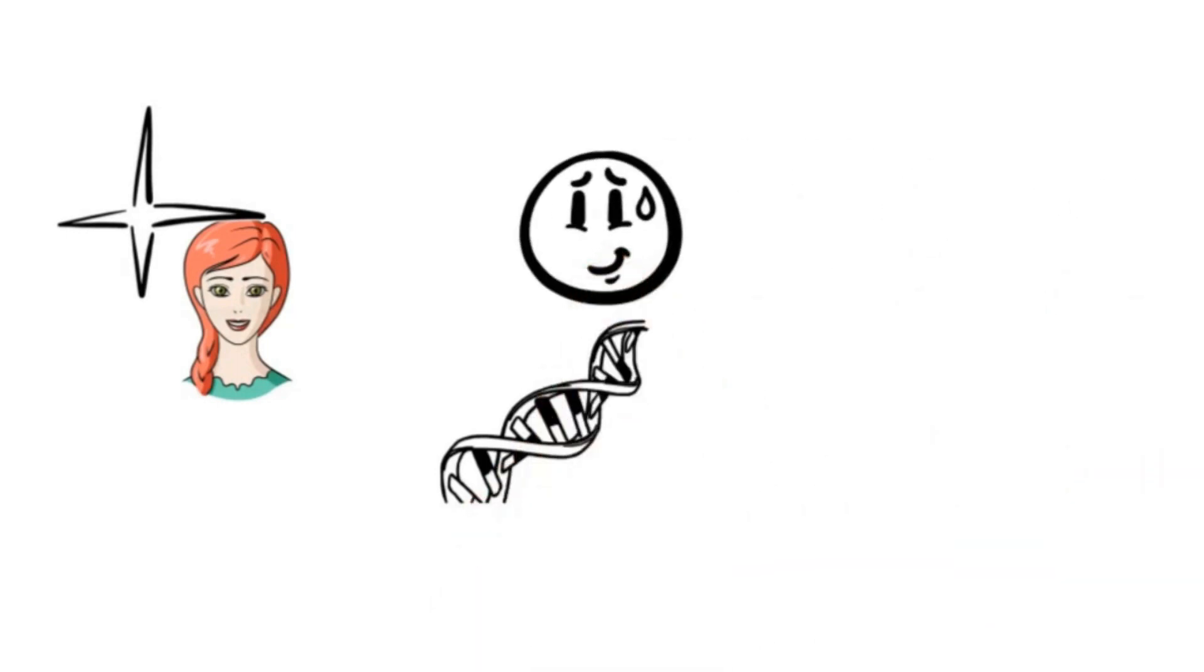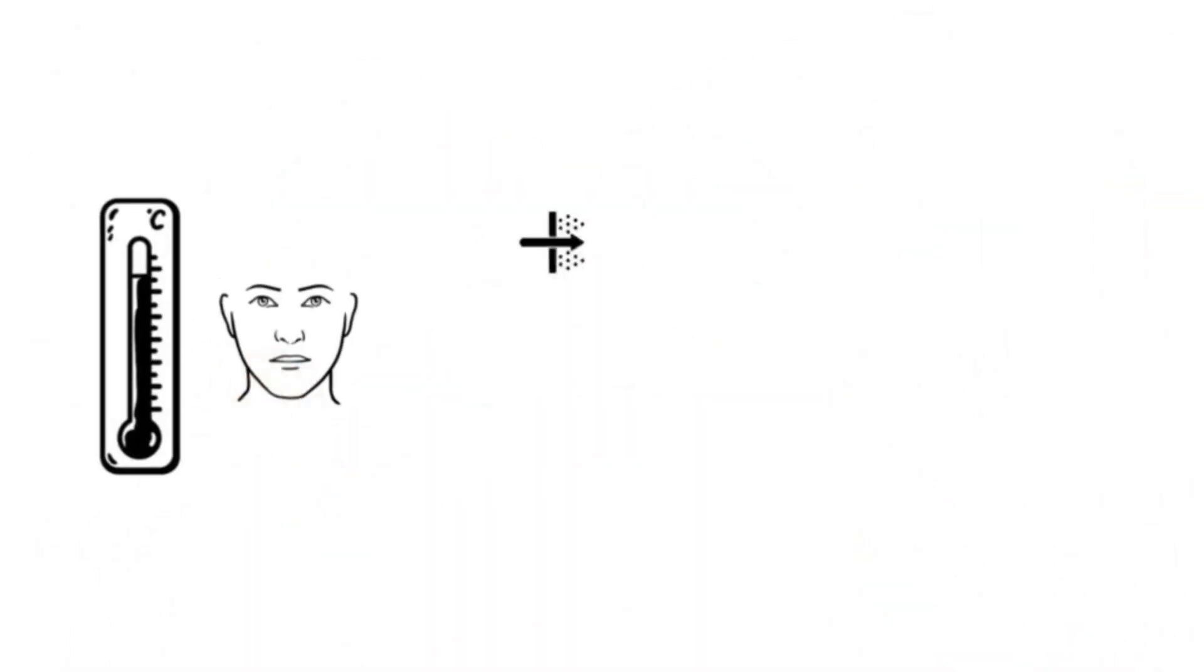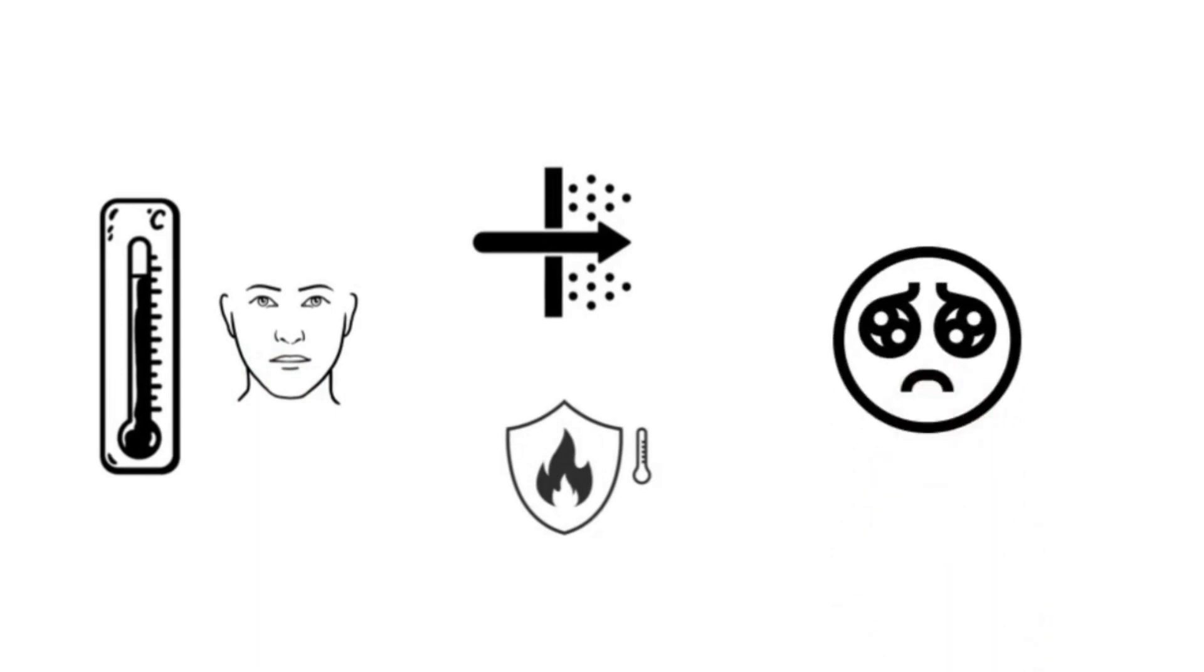They are more sensitive to heat, as the reduced eumelanin production offers less protection against the sun's rays, making them prone to sunburns. Their fair skin allows heat to penetrate and be absorbed more easily, heightening their sensitivity to higher temperatures.